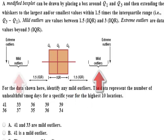Extreme outliers would be data values that are more than 3 times the interquartile range above Q3 or below Q1. The interquartile range is gotten by subtracting Q1 from Q3.